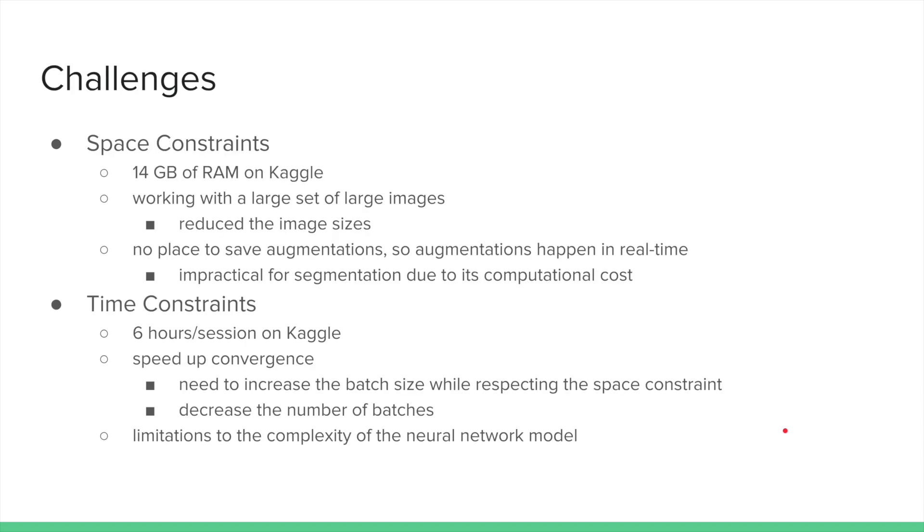Kaggle imposed two major constraints when running programs on their servers: space and time. The limited RAM and disk space suggested the need for image size reduction and augmentations at training time, which is problematic for computationally expensive segmentation algorithms.